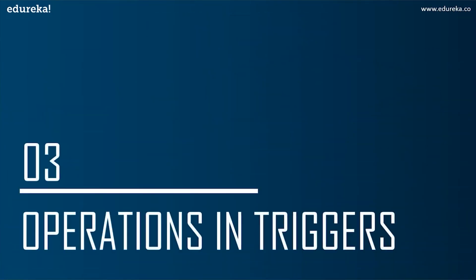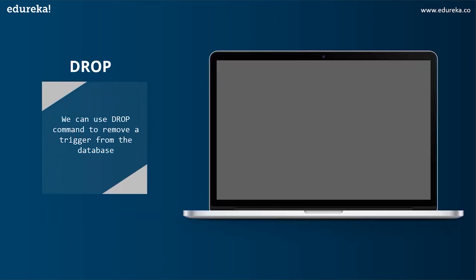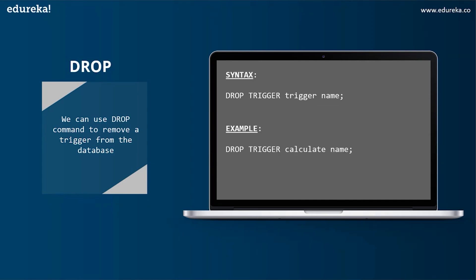Let's now try to implement an example of a trigger in SQL. The next topic is operations in triggers. We can perform many operations using triggers — some may be simple and some may be a little complex, but once we go through the query it's easy to understand. The first operation is DROP. We can use the DROP command to remove a trigger from the database. The syntax for this is: DROP TRIGGER trigger_name. Let's head to MySQL Workbench.